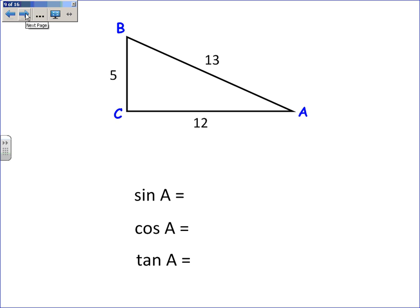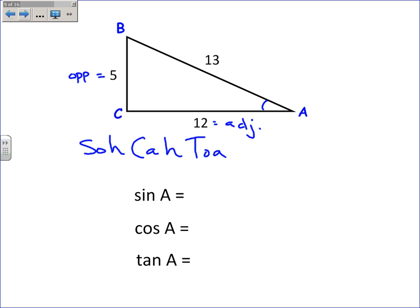Here's an example looking at angle A. Using SOH-CAH-TOA: the 5 is the opposite because it's on the opposite side of the triangle, the 12 is the adjacent leg, and 13 is the hypotenuse. So the sine is 5 over 13, the cosine is 12 over 13, and the tangent is 5 over 12. Feel free to leave those as fractions.